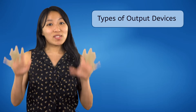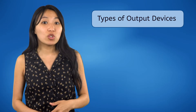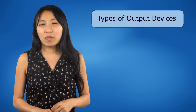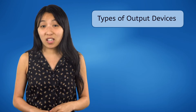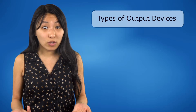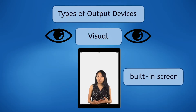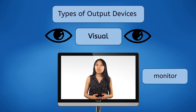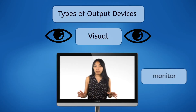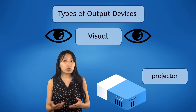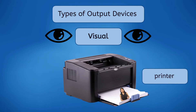Okay, so now that you understand what output devices do, let's take a look at some examples. Some of these will seem really obvious and others you've probably never even heard of. Some output devices translate computer data into things you can see. Some computers today, such as tablets, have built-in screens. But there are also standalone screens known as monitors. You can also visually display computer data through a projector, or if you want the computer data recorded on a piece of paper, you'd send it through a printer. Visual output devices are the most common way we interpret computer data.